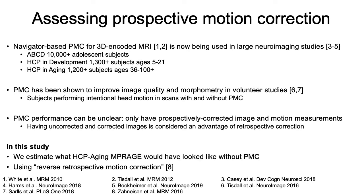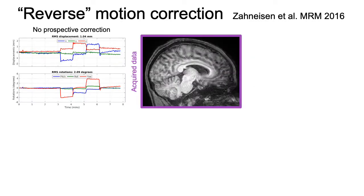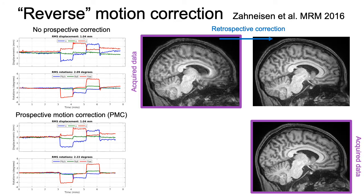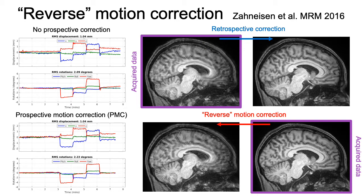In this study we estimate what the HCP aging MP-rage would have looked like without prospective correction, and we do this using reverse retrospective motion correction. Reverse motion correction was proposed by Zahneisen and colleagues a few years ago for 3D encoded sequences. In a prospectively corrected scan we can use reverse motion correction to go the other way and estimate what the image would have looked like without prospective correction.